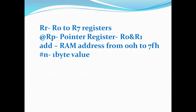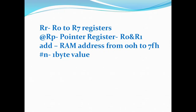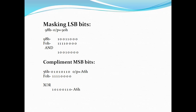To summarize the operand notation: Rr means R0 to R7 registers, pointer registers are R0 and R1, addr means RAM addresses from 00h to 7Fh, and #N is a one-byte constant value. For the standard logic gate truth table: AND outputs 1 only for input 1,1. OR outputs 0 only for input 0,0. XOR outputs 0 when both inputs are the same (0,0 or 1,1) and outputs 1 for differing inputs. NOT gate is the complement of the input.